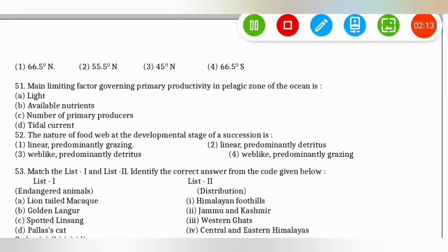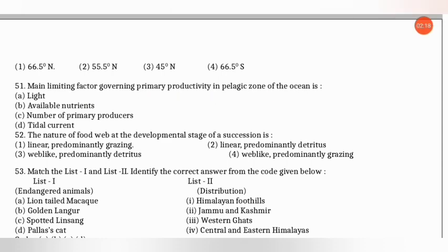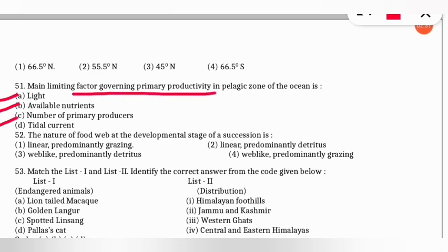The next question: what is the main limiting factor governing primary productivity in the pelagic zone of the ocean? The correct option includes A, B, and C — light availability, nutrients, and number of primary producers are all limiting factors. Tidal current is not one of them.